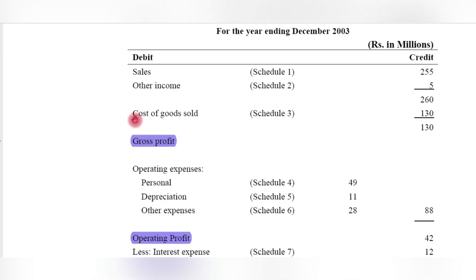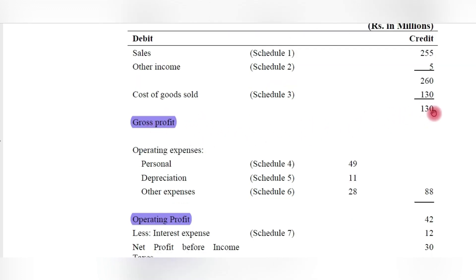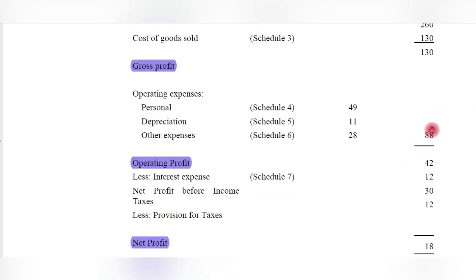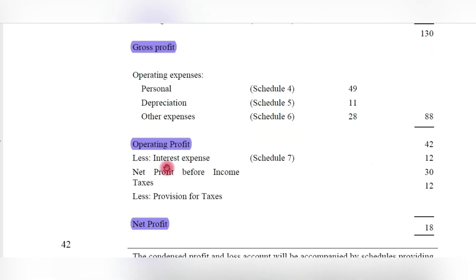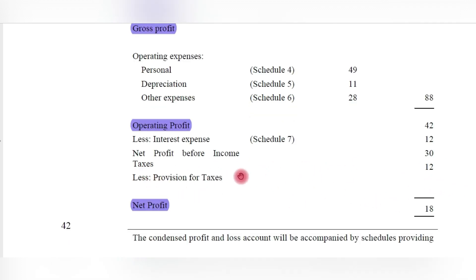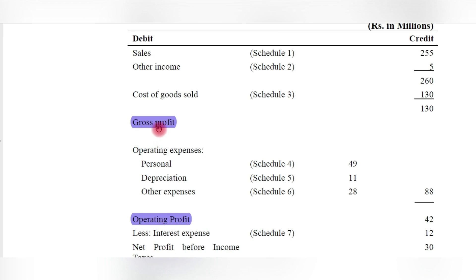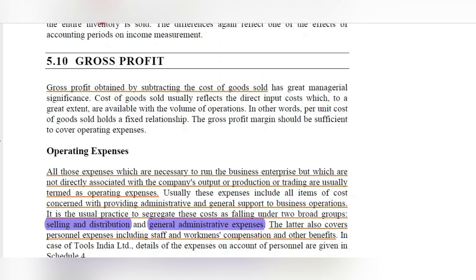Cost of goods sold — the purchase price of the goods sold — is 130 rupees, therefore gross profit is 130 rupees. Operating expenses: personal expenses, depreciation expense, and other expenses are 49, 11, and 28 rupees respectively, totaling 88 rupees. Operating profit is 130 minus 88, which equals 42 rupees. After removing interest expense of 12 rupees, profit before tax is 30 rupees. Taxes of 12 rupees are paid, so net profit is 18 rupees. Using this example, we will explain gross profit, operating profit, and net profit.